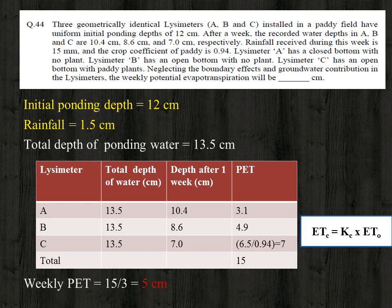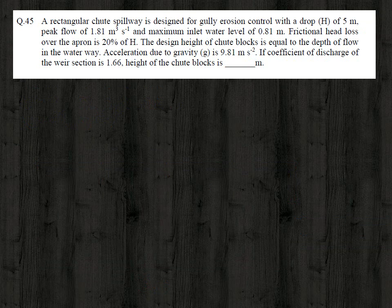The next question: a rectangular chute spillway is designed for gully erosion control with a drop of 5 meter, peak flow of 1.81 cubic meter per second, and maximum inlet water level of 0.81 meter. Frictional head loss over the apron is 20 percent of h. The design height of the chute block equals the depth of flow in the waterway. Acceleration due to gravity is 9.81 m/s².